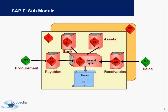SAP Finance is not just a module developed from figures within itself — figures also come from external modules like Materials Management, also called the Procurement module, and it also derives data from the Sales module, also called Sales and Distribution. Data from different kinds of modules is gathered and captured together within the Finance module, and then finally the reports are created.